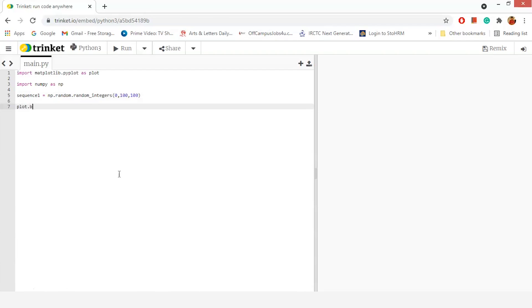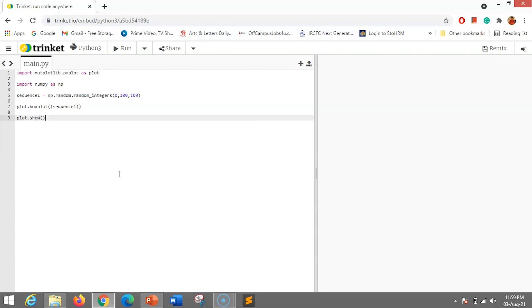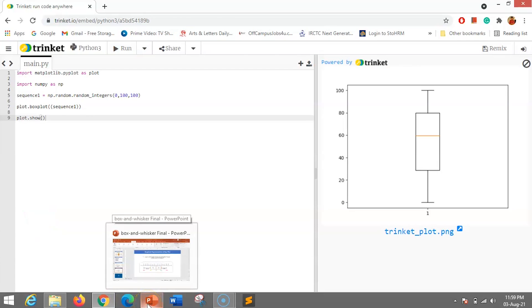Now to make a box plot, just use the plot.boxplot function and pass it to sequence. Make sure you spell it right. Now to get the graph, use plot.show. Now just run it. You can see we have our box plot ready. So in this way, you can create the box plot in Python.